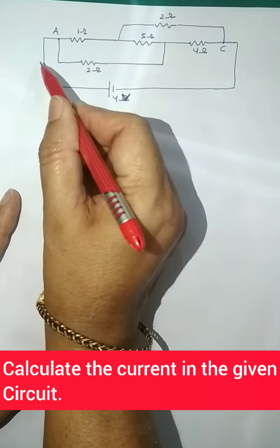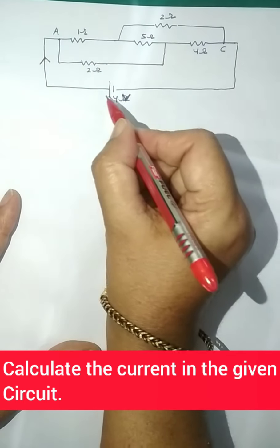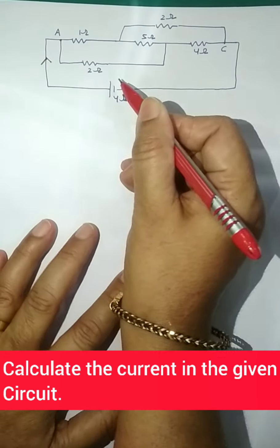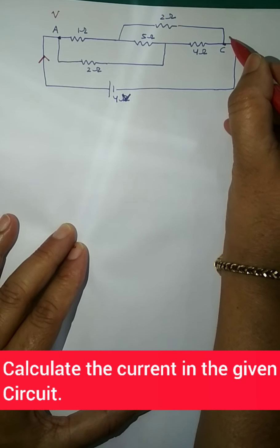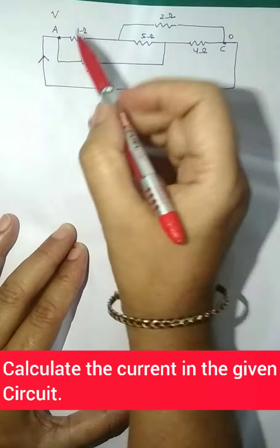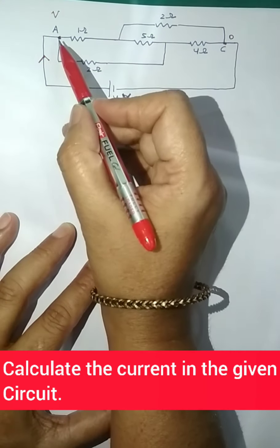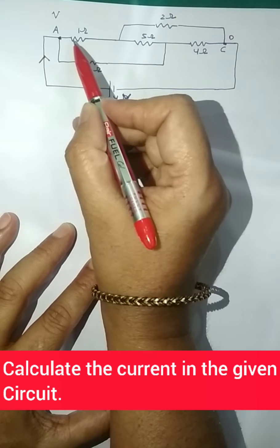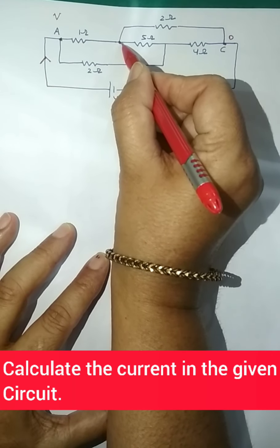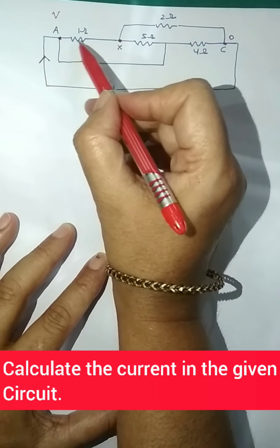As the current flows in this arm, the current is flowing in this direction. The battery has a higher potential on this side and lower potential on the other side. So end A will be at higher potential V, and end C will be at lower potential — that means C is at zero potential. Now, as the current flows, the potential will change. Let's say at this intermediate point the potential is x.